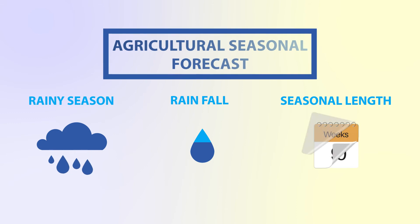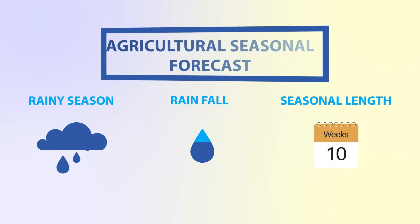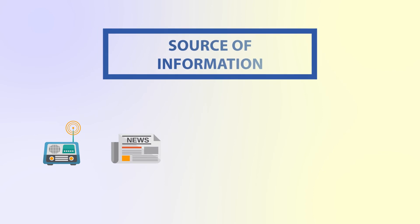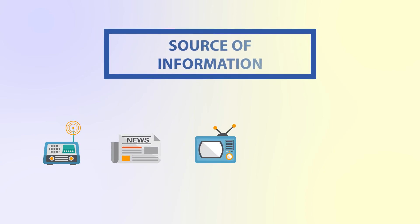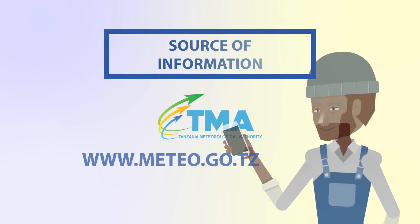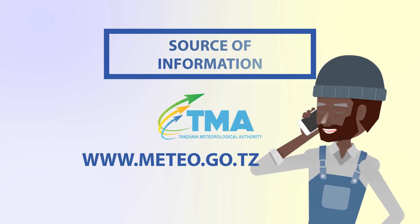Sources of weather information include: listening to the radio, reading newspapers, watching TV, following social media, and asking your extension agent. You can also subscribe to TMA to receive weather information through your mobile phone.